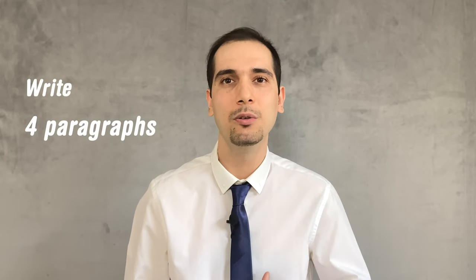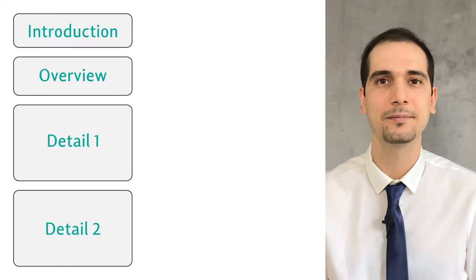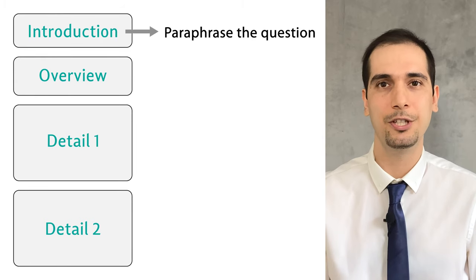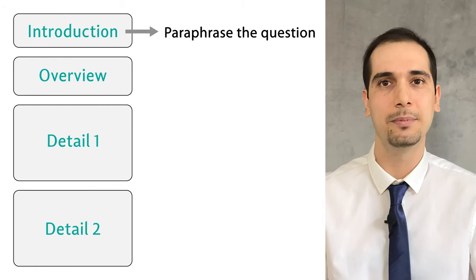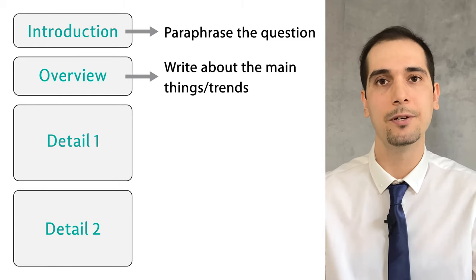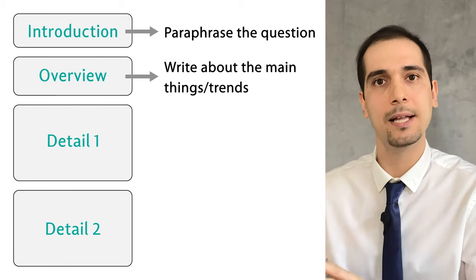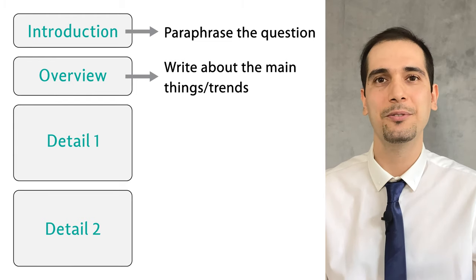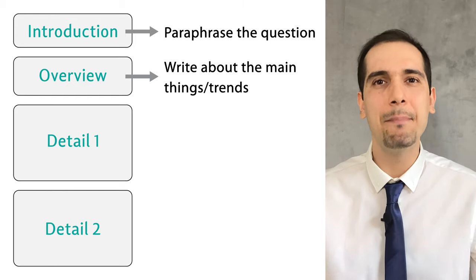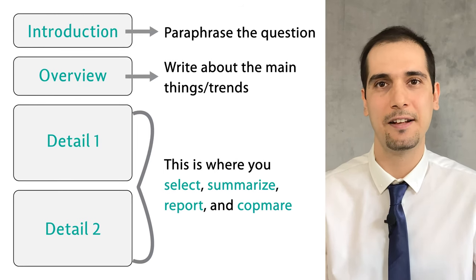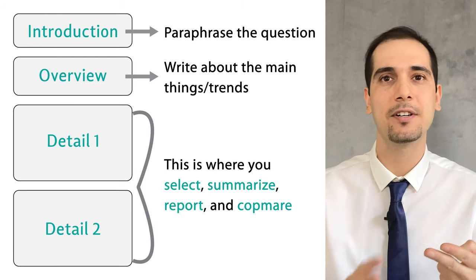How many paragraphs should you include? I would generally go with four paragraphs. The first paragraph is your introduction — where you paraphrase the question. The second paragraph is the overview paragraph, where you give the reader a general idea of what the chart or table is about — describing the main trends or main stages. The next two paragraphs are the detailed paragraphs, where you do all the selecting, summarizing, reporting, and comparing.